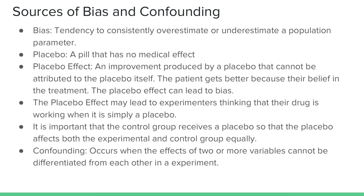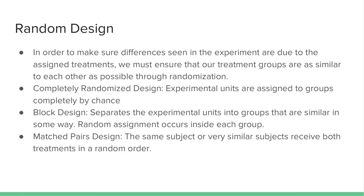When conducting an experiment, it is important to consider confounding variables. Confounding occurs when two variables are related in a way so that their influences on a response variable cannot be differentiated from each other. On the AP Statistics exam, you are expected to identify a confounding variable when necessary and also explain how the confounding variable relates to the explanatory variable and how it affects the response variable.